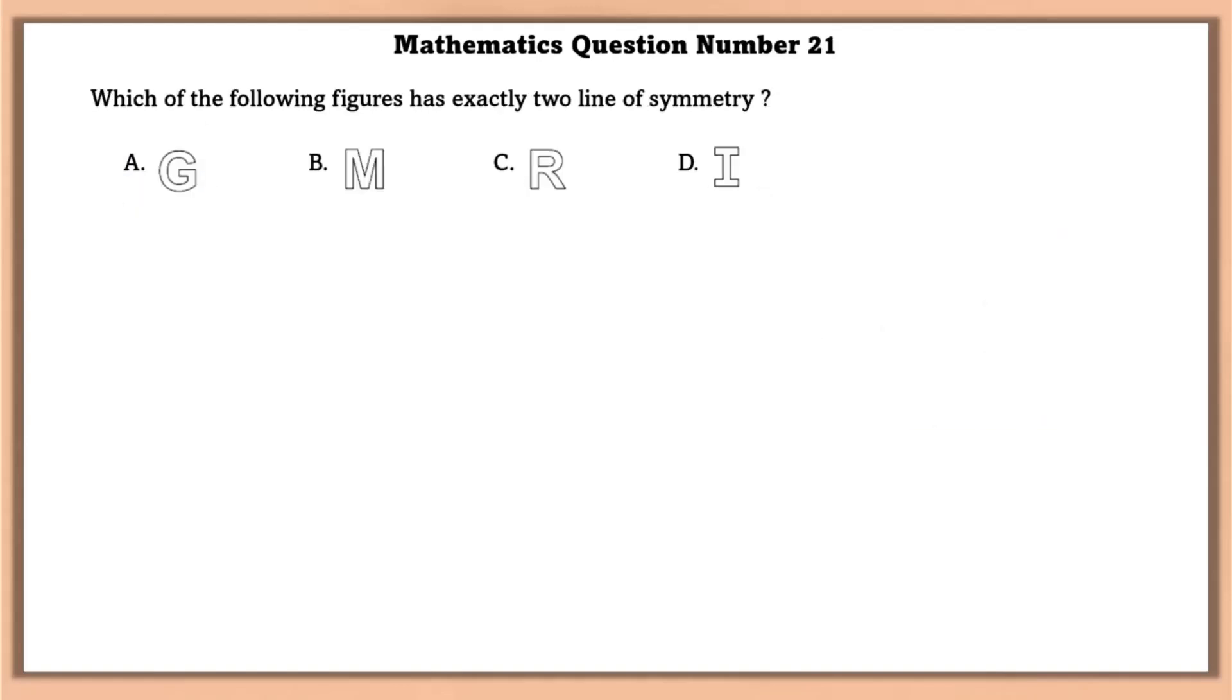Mathematics question number 21. Which of the following figures has exactly two lines of symmetry? D1 has exactly two lines of symmetry.